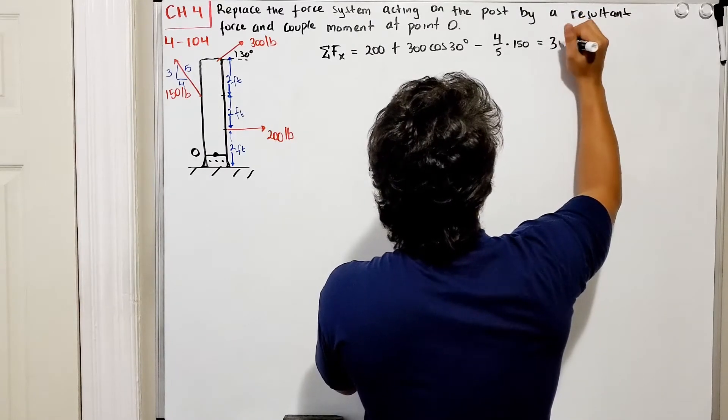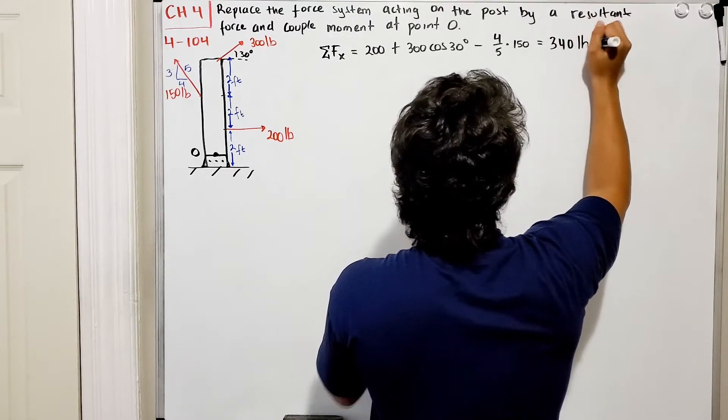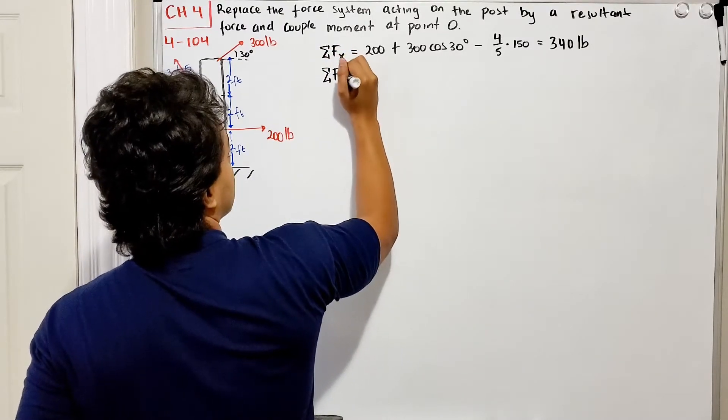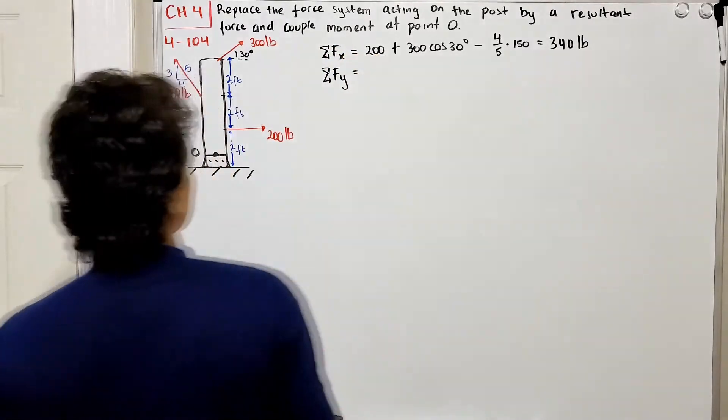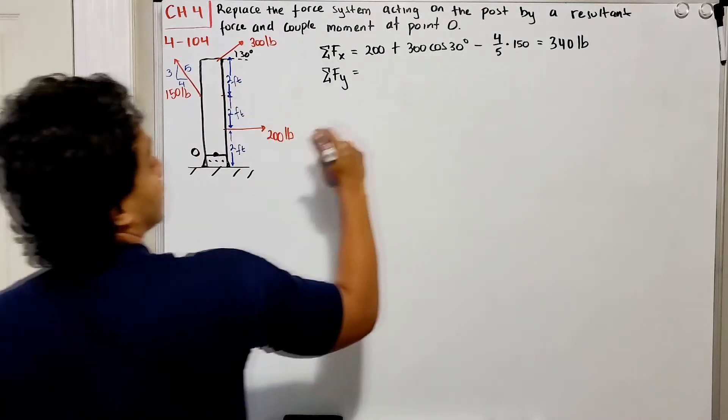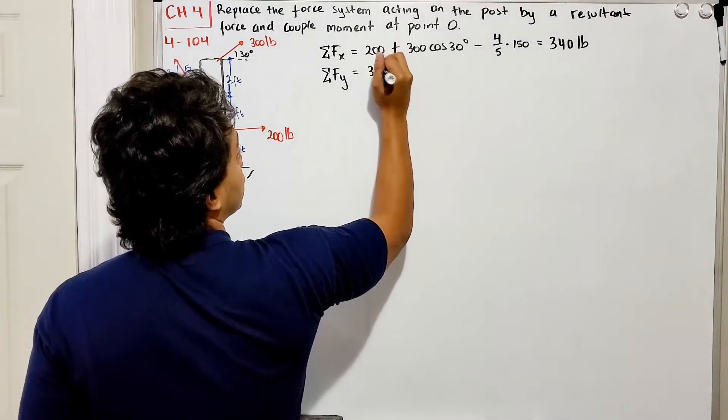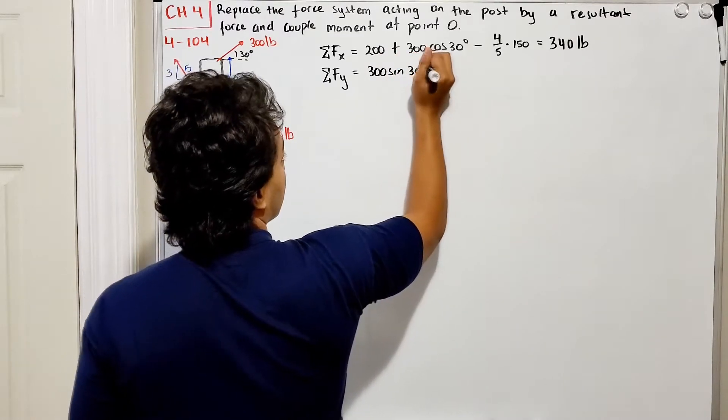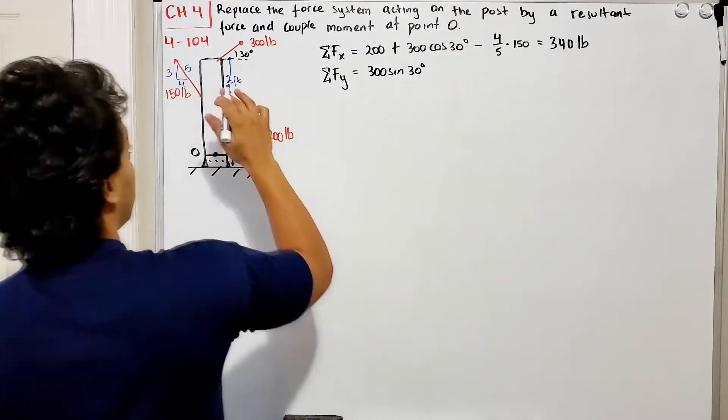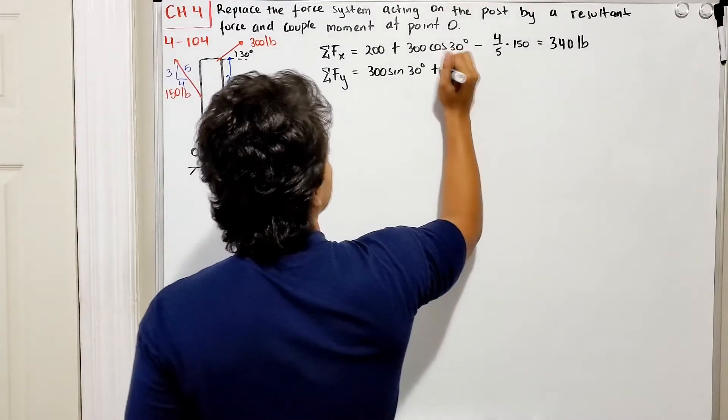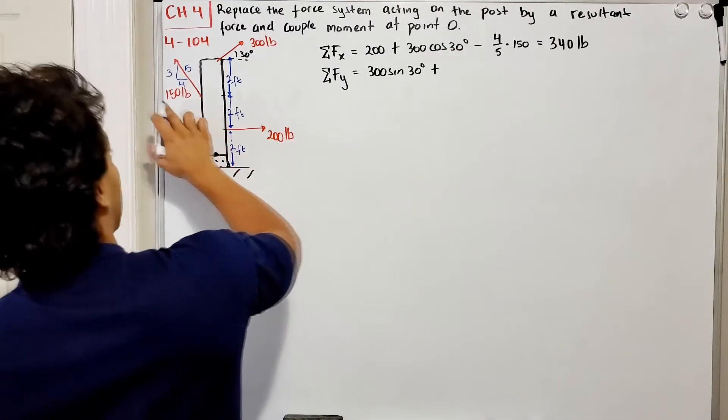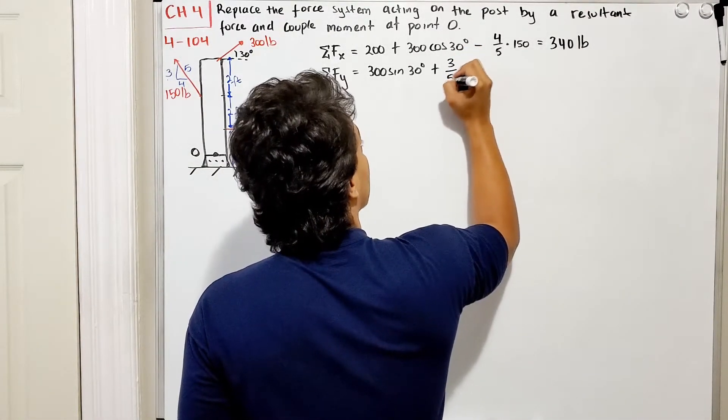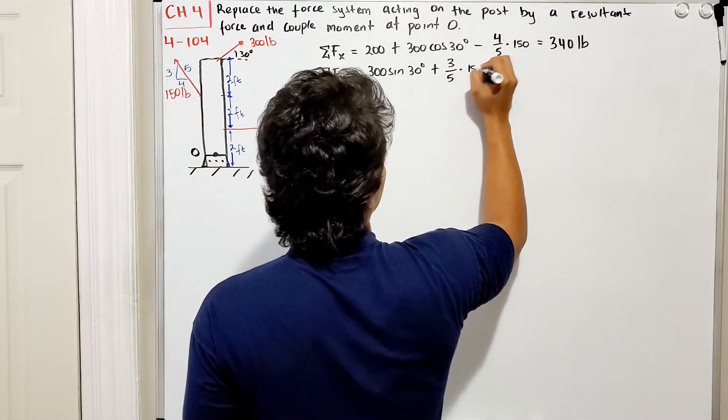Now let's do the sum of forces in the y direction. I have the 300 multiplied by sine of 30 degrees going up, and I also have a positive 150, how much of it? Three out of five, so three-fifths multiplied by 150.